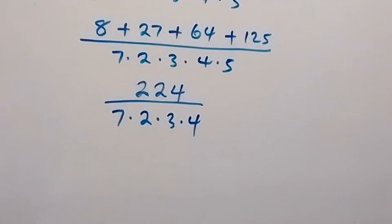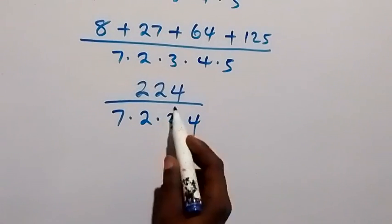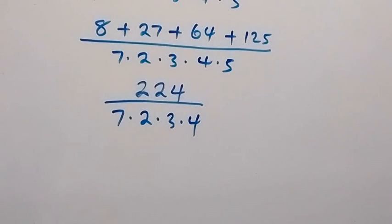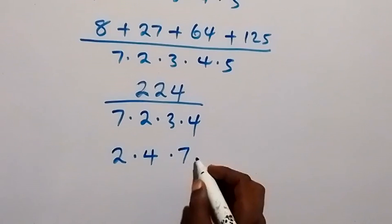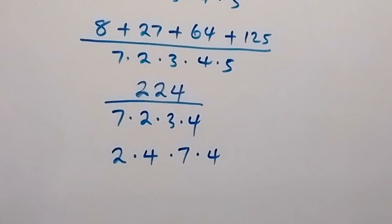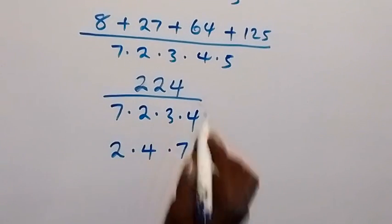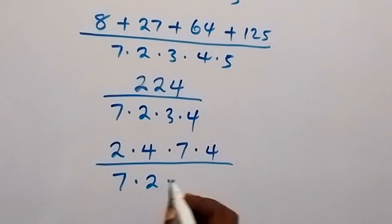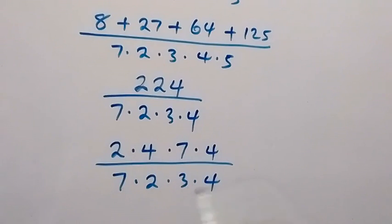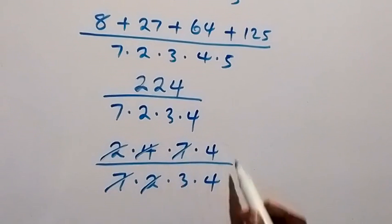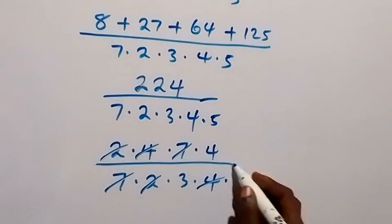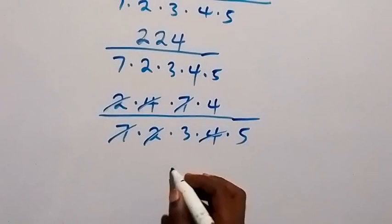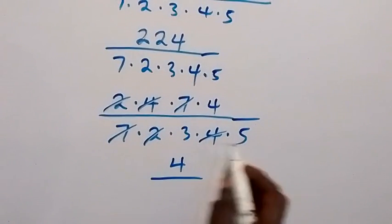To make the work easier, we can write 224 as 2 times 4 times 7 times 4. So we have 224 divided by 7 times 2 times 3 times 4. We can now cancel: 2 cancels with 2, 7 cancels with 7, 4 cancels with 4. What we have left is 4 over 3 times 5, that's 15.